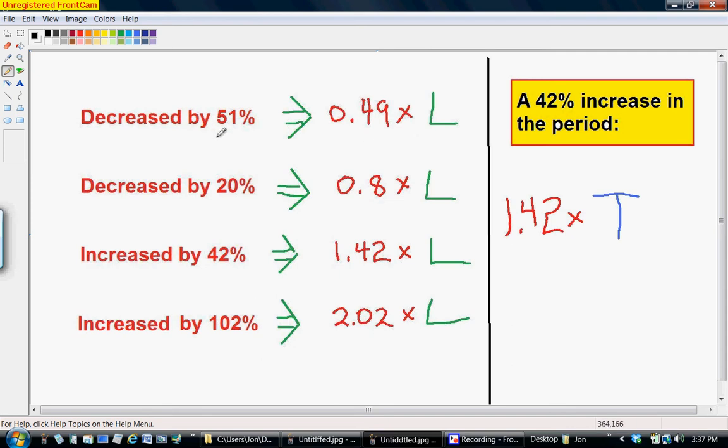So decrease by 51 percent, what you would do is multiply L by 0.49 because 49 percent of L would be left, so that would be the decrease of 51 percent. Decrease by 20 percent you would write 0.8 times L for a 20 percent decrease. An increase of 42 percent would be 1.42 times L, and then an increase by 102 percent would be 2.02.